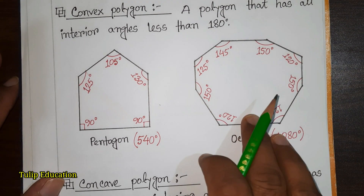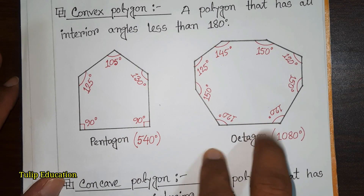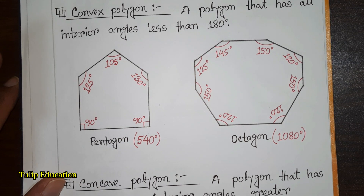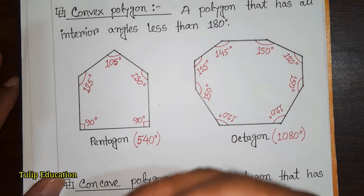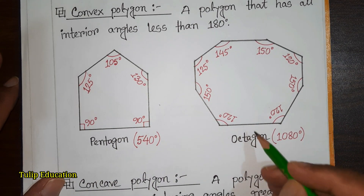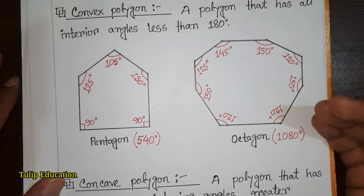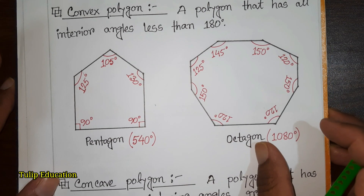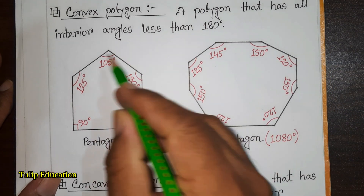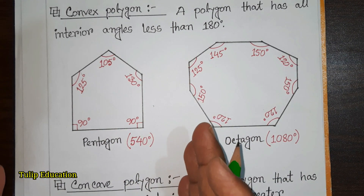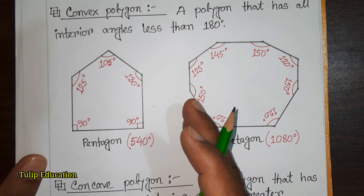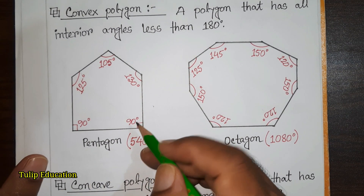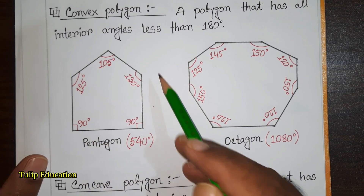You can see here there are two polygons — one is a pentagon and another is an octagon. Pentagon means it has five sides and five angles; octagon means it has eight sides and eight angles. According to the definition, all the interior angles — that means the angles inside the shape — must be less than 180 degrees.